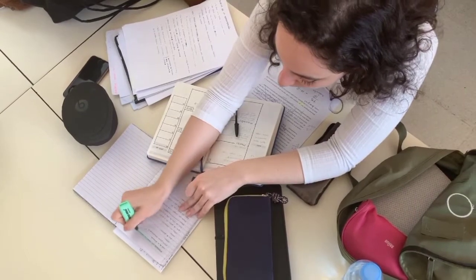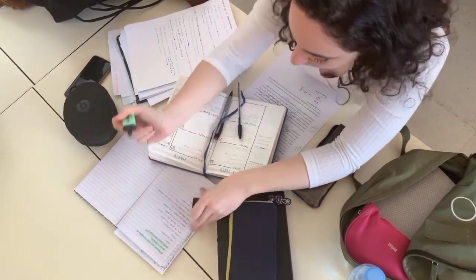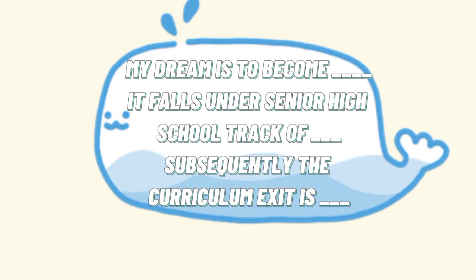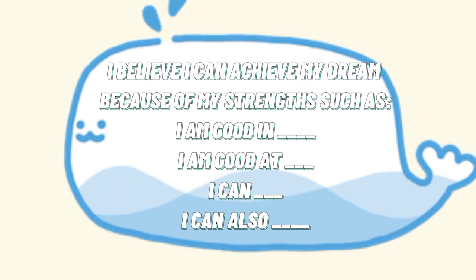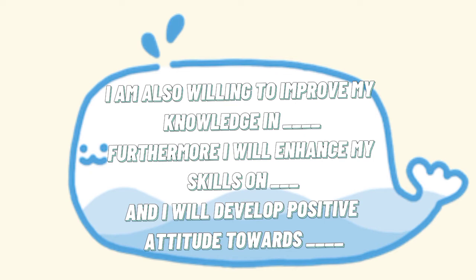List down at least five ways to increase your understanding about your possible Senior High School track. Now, it's time to share your thoughts and feelings. Fill in the missing words: My dream is to become [blank]. It falls under the Senior High School track of [blank]. Subsequently, the curriculum exit is [blank]. I believe I can achieve my dream because of my strengths such as: I am very good in [blank], I am good at [blank], I can [blank], I can also [blank], I am also willing to improve my knowledge in [blank], I will enhance my skills on [blank], and I will develop positive attitudes towards [blank].